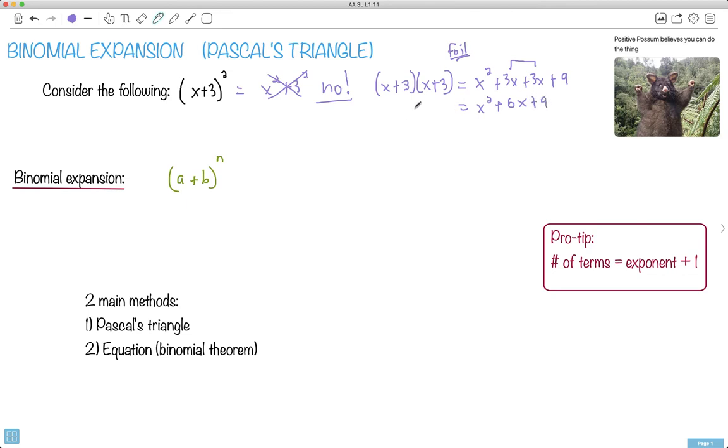So what did we notice? First of all, when I had this exponent, notice how many terms I have? Anything separated by pluses or minuses is a term. So I have x squared, the 6x, and the 9. Do you notice I have 3 terms, but I only had 2 as the exponent? So here's a pro tip: the number of terms in the expansion is always the exponent plus 1.